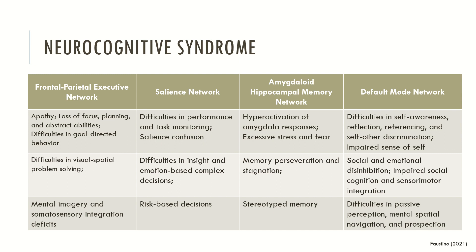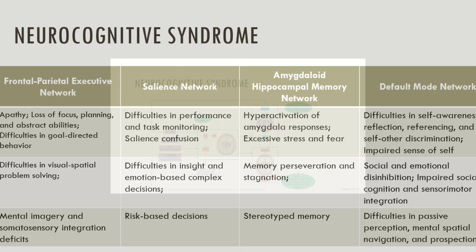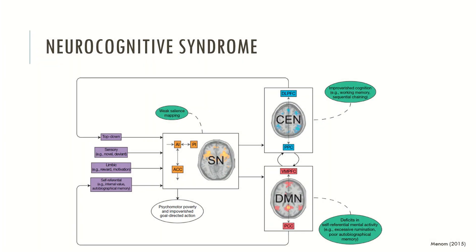The neurocognitive syndrome must have several symptoms that are typically related to these neural networks. We have a model here that helps us understand how the neurocognitive syndrome may be working in the brain. The top-down inputs — which include sensory input, limbic input and self-referential cognition — all tend to be processed initially in the salience network. However, problems in weak salience mapping result in impoverished cognition in the dorsal prefrontal cortex and deficits in self-referential mental activity, which is typically associated with the default mode network.